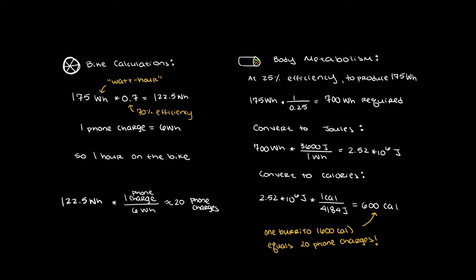Since it takes about 6 watt hours to charge your phone, after pedaling the bike for an hour, you could charge your phone for about 122.5 watt hours divided by 6 or 20 times. That's pretty cool.